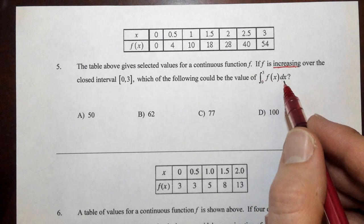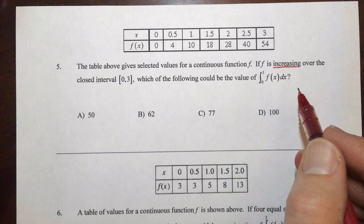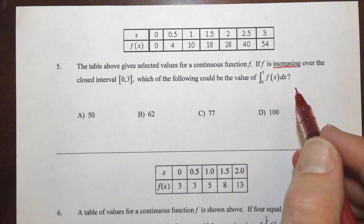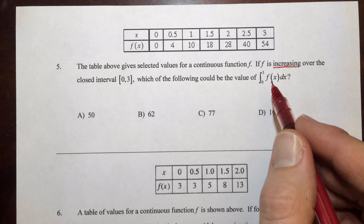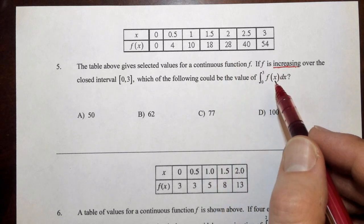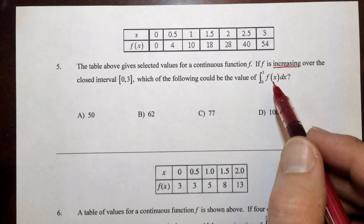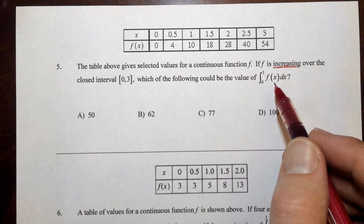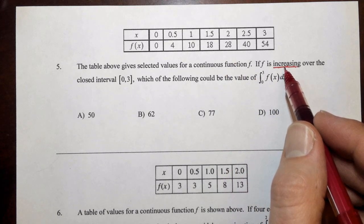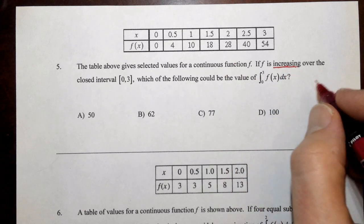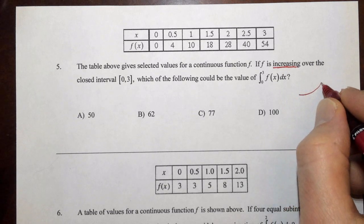We know that we have different possibilities here to come up with a value for this based off of the table. We've got the left sum, the right sum, the trapezoid sum, and the midpoint sum. Now, we're told that the function's increasing. So if the function's increasing, let me just draw a quick increasing function.